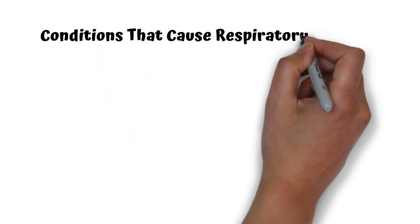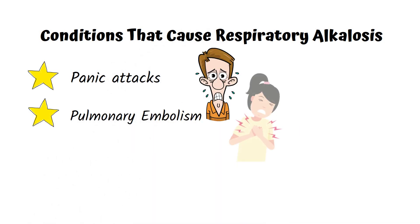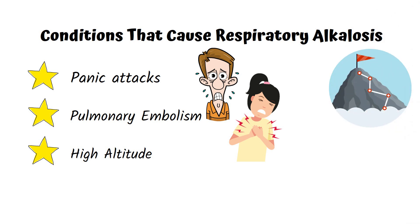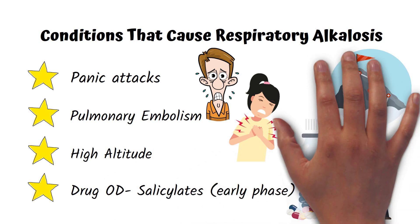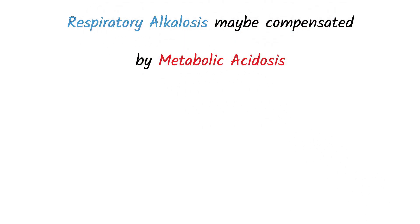An increase in the respiratory rate raises the pH, causing respiratory alkalosis. This can be caused by any condition that increases the firing of the respiratory centers in the brain, like panic attacks or pulmonary embolism. In pulmonary embolism, sudden pulmonary vascular obstruction results in a sudden drop in the partial pressure of oxygen, compensated by taking deeper or rapid breaths. High altitude and low oxygen concentration can also stimulate the respiratory center. Drug overdoses like salicylates during the early phase can increase the respiratory rate. Respiratory alkalosis may be compensated by metabolic acidosis.